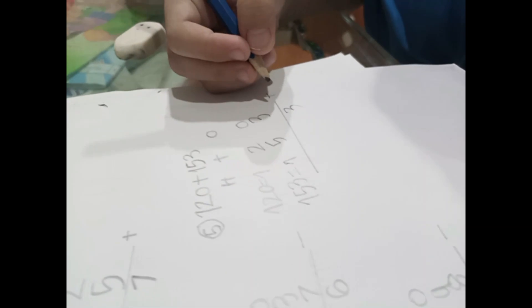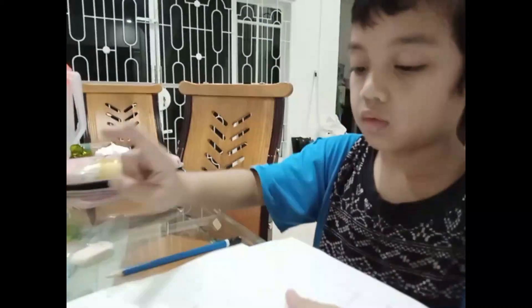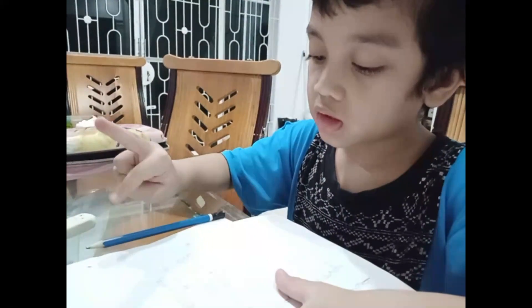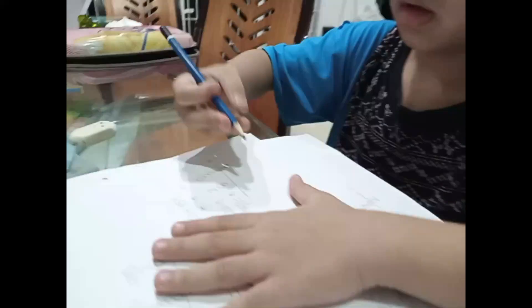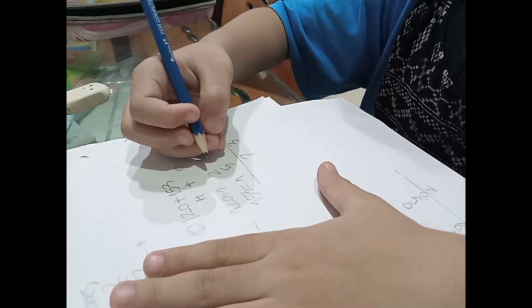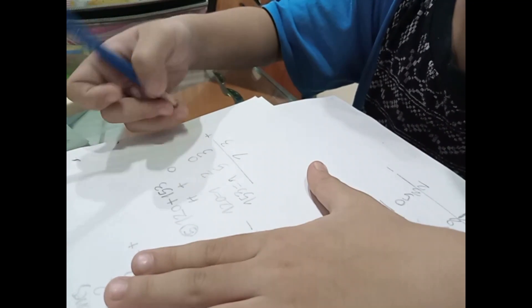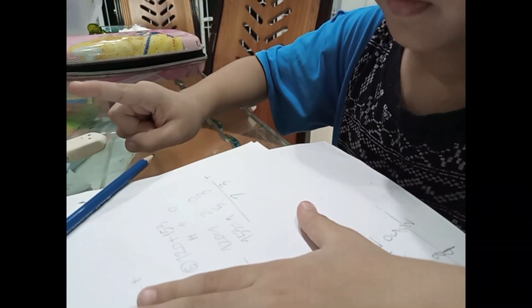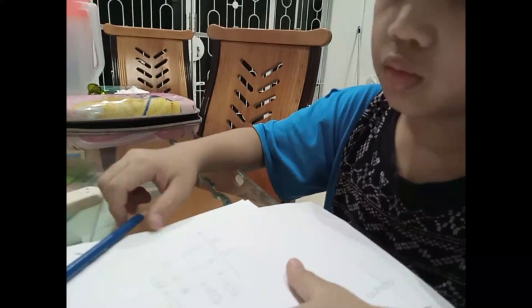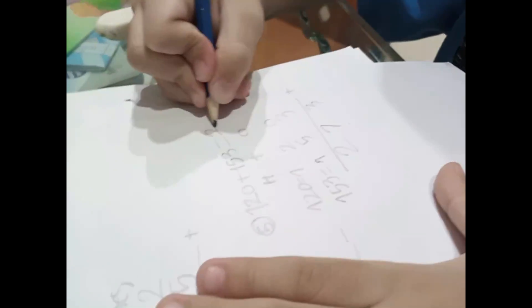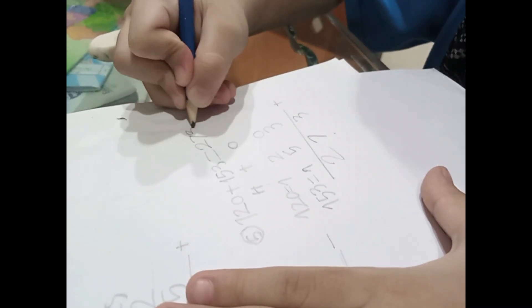In the group of tens, two plus five. Five in my mouth, two in my hand. After five, six, seven. And then in the group of hundreds is one plus one. One. After one is two. So the result is 273. Thank you.